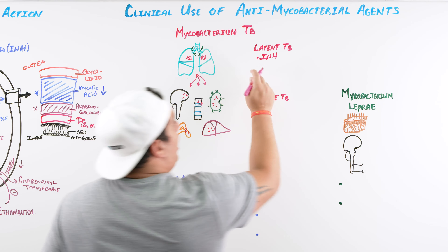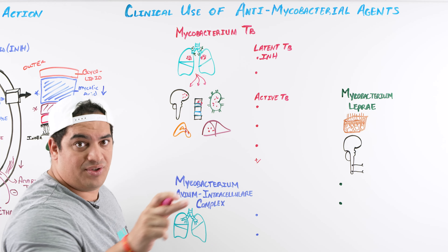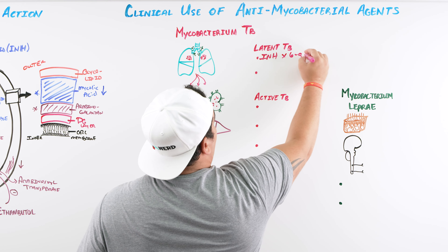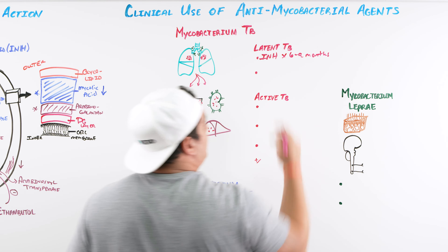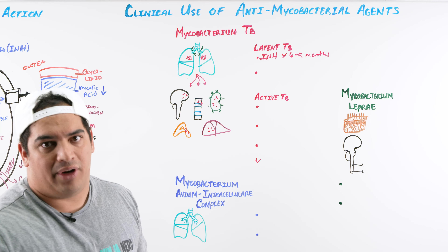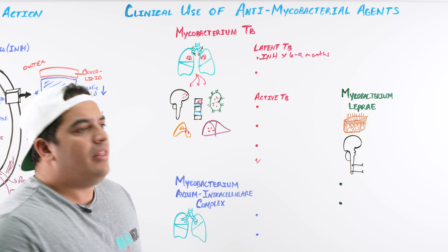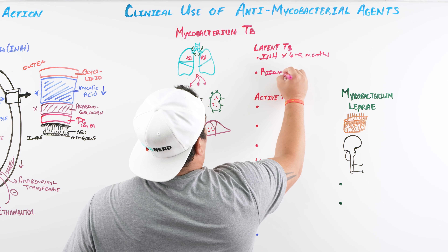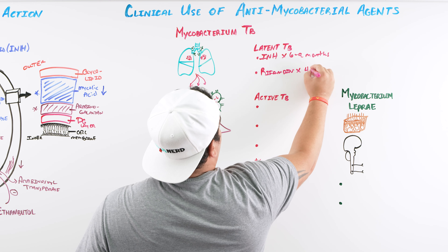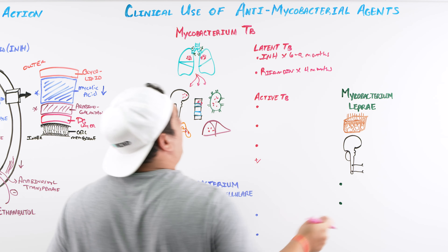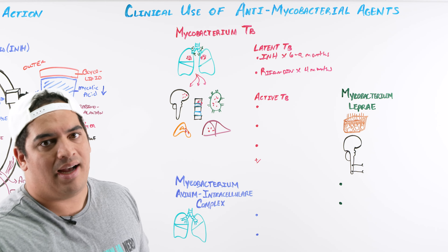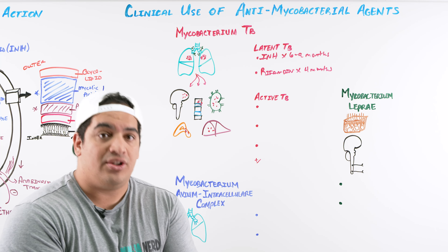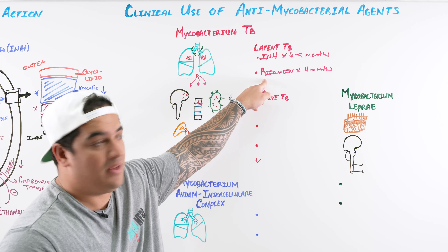For latent TB, where there's no active pneumonia or systemic spread, we utilize one of two drugs. First option is isoniazid (INH) for about six to nine months — some literature says six, some says nine, depending on dosing frequency. The second option is rifampin for four months. So if a patient has latent TB with a positive tuberculin skin test of a particular size but no active infection, we put them on one of these two drugs for that duration.